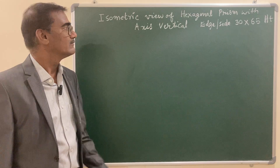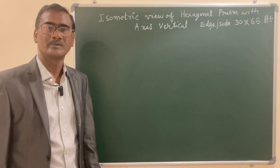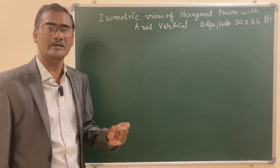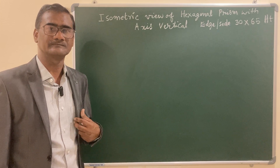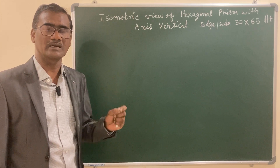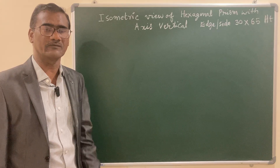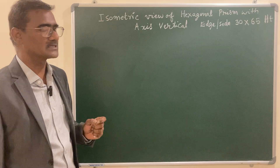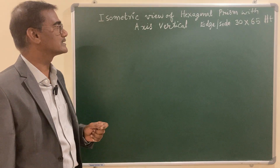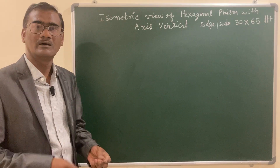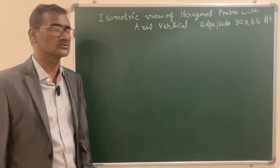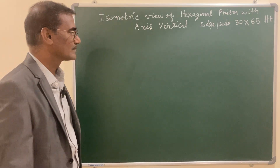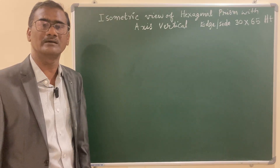A very important thing to understand: whenever you are drawing a prism that involves non-isometric lines, you have to draw the orthographic view — specifically the top view. The top view of a hexagonal prism is a hexagon, which you have to draw. There are two configurations, and the simplest way of drawing a hexagon is the circle method.